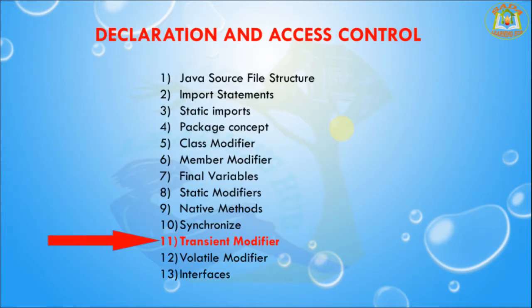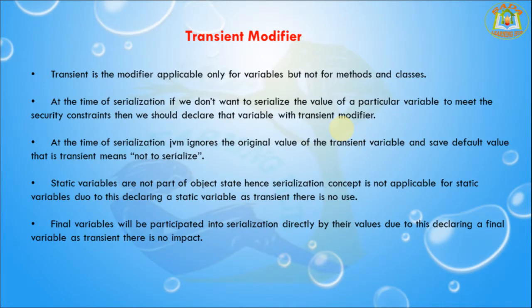Next I am going to discuss about the Transient modifier. Transient is a modifier applicable only for variables but not for methods and classes. At the time of serialization, if we don't want to serialize the value of a particular variable to meet security constraints, then we should declare that variable with the transient modifier.